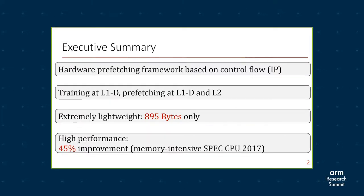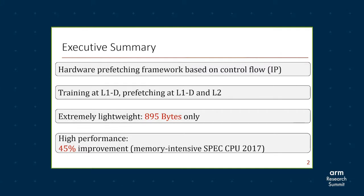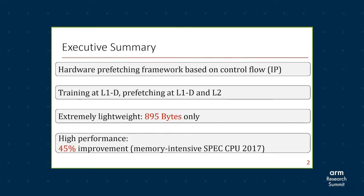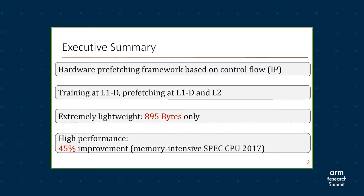Before we jump into the details, let's have a quick summary. A prefetching framework is based on the control flow, which is also known as the instruction pointer. We perform training at the L1D and we bring the prefetch blocks both into L1D and L2. Our framework is extremely lightweight, demanding less than 1 KB of hardware overhead, and within 1 KB we perform equally well with state-of-the-art prefetchers, providing 45% performance improvement in terms of SPEC CPU 2017 benchmarks.